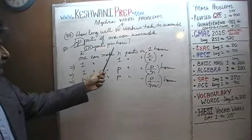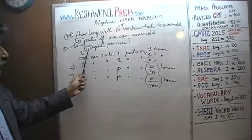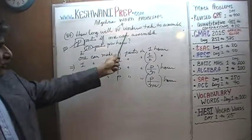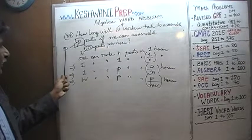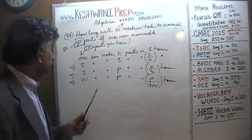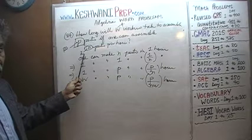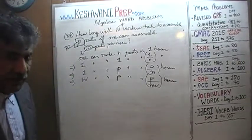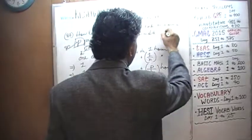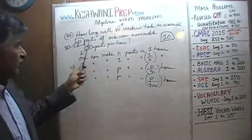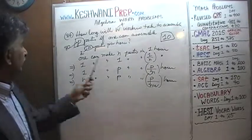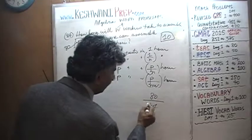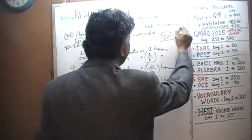So if one worker makes two parts per hour and we have four workers, they make eight parts per hour. Eighty parts at eight parts per hour takes ten hours. Now let's plug into the formula: p is 80, n is 2, w is 4. That gives us 80 over 2 times 4, which is 80 over 8, which equals 10. It checks out — that answer is correct.